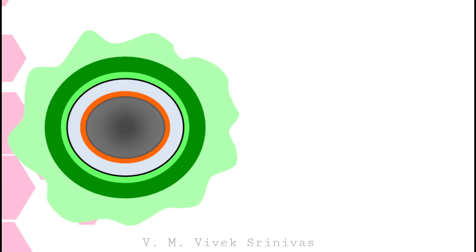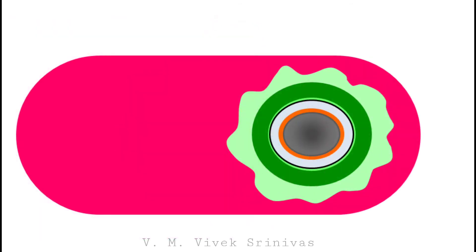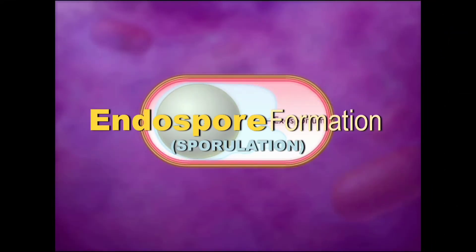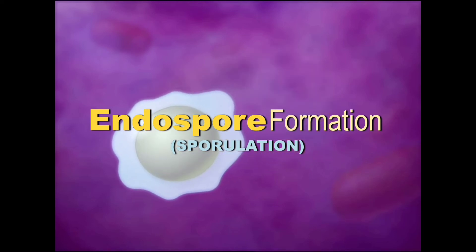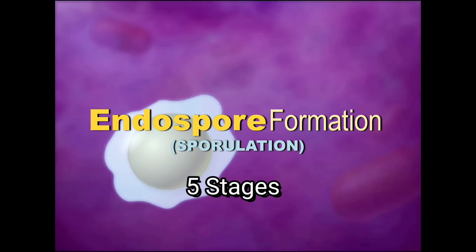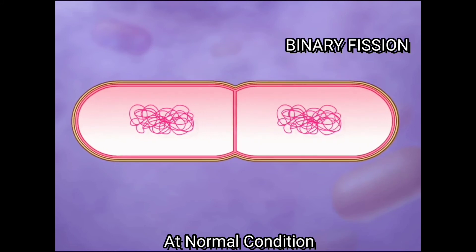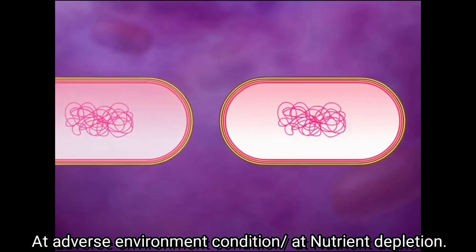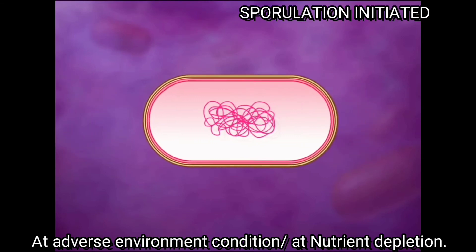During adverse environmental conditions or nutrition depletion, some bacteria will produce the endospore — that is, the spore within the bacterial cell. The process of endospore formation in bacteria is referred to as sporulation. The spore formation is divided into five stages. At normal environmental conditions with nutrient availability, spore-forming bacteria divide by binary fission. But when environmental conditions become adverse or nutrients get depleted, endospore formation gets initiated.